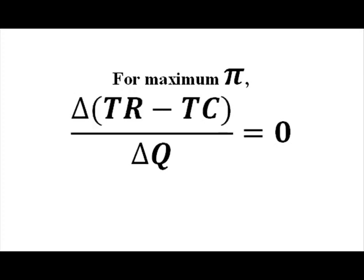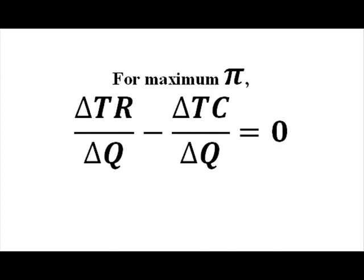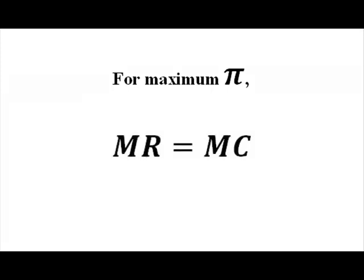If I break this down a little, I'll get some terms that I recognize. For maximum profit, the firm owner chooses the level of output at which marginal revenue equals marginal cost.